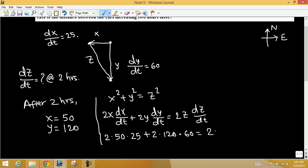We need to find z, the distance between the cars two hours later. Using x² + y² = z², we have 50² + 120² = z². Use your calculator: 50² + 120² = 16,900 = z². Take the square root of both sides, so z equals 130.